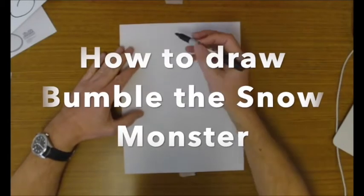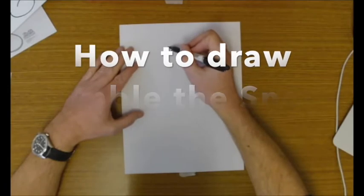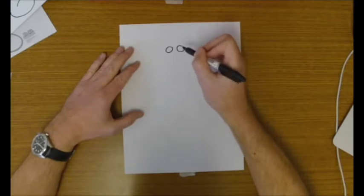Okay, this is How to Draw Bumble the Snow Monster. This is one of the characters from Rudolph the Red-Nosed Reindeer, the cartoon.